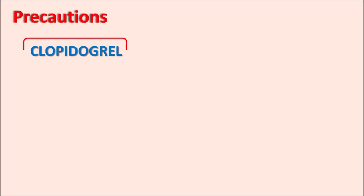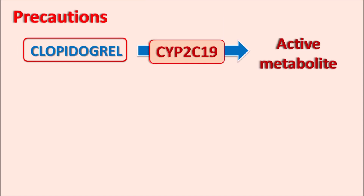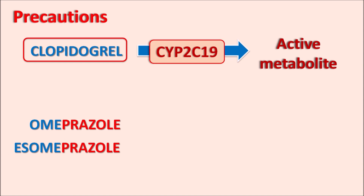Regarding precautions: clopidogrel is a prodrug converted to its active metabolite by CYP2C19, a cytochrome P450 enzyme required for its activation. When clopidogrel is given with drugs like omeprazole or its S-isomer esomeprazole — which are proton pump inhibitors used to treat gastric ulcers and acidity — these drugs inhibit CYP2C19 activity, thereby inhibiting the bioactivation of clopidogrel. So when combined, the action of clopidogrel is reduced. This is a significant drug interaction that should be checked before prescribing clopidogrel.